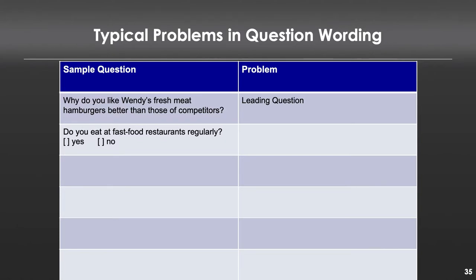The next problem with question wording: 'Do you eat at fast food restaurants regularly? Yes or no?' That's an ambiguous question. What does it mean to eat regularly? For you, it might be once a week; for me, once a month; for someone else, once a day. If you want to ask a question, be hyper-specific: 'Do you eat at Wendy's every day? Every week? Every month?' Make sure everyone reading your question interprets it exactly the same way — if there's any deviation in interpretation, you're asking lots of different questions to different people.